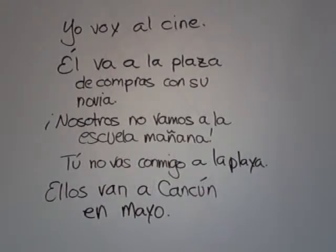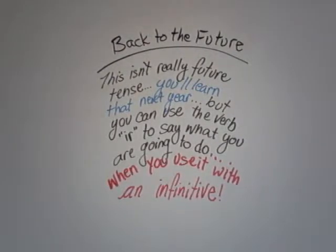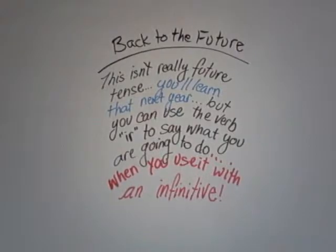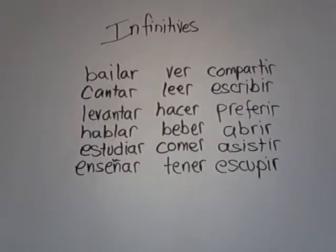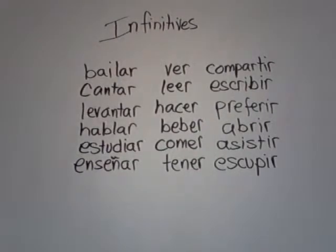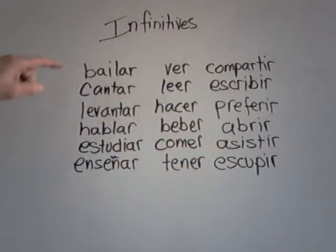But we can also talk about the future. It isn't really the future tense — you'll learn that next year. But you can use the verb IR to say what you are going to do when you use it with an infinitive. An infinitive is a fancy name for a verb that's not conjugated. In Spanish, verbs come in three flavors: the AR verbs, the ER verbs, and the IR verbs.